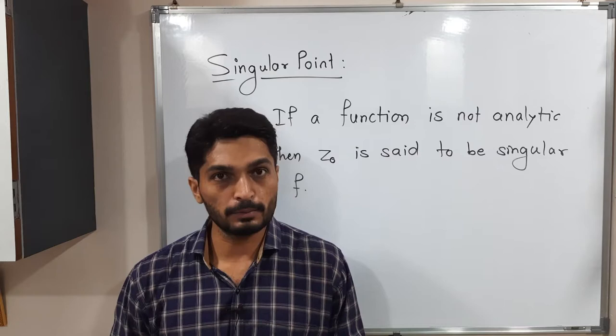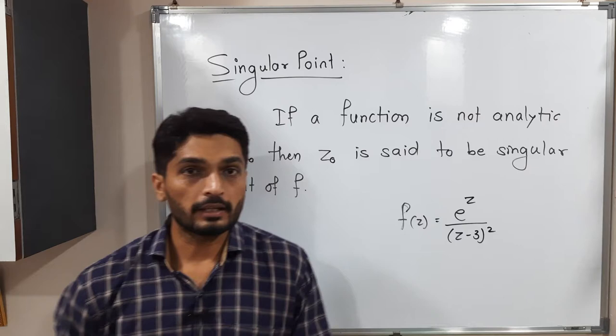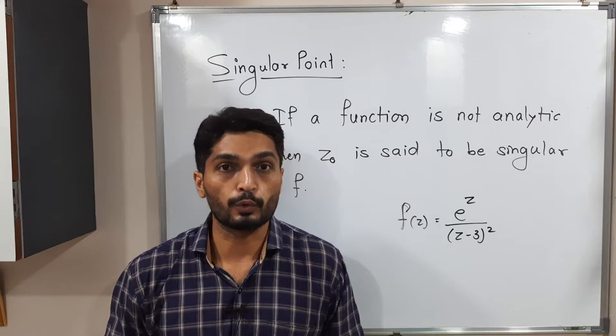Suppose we have a function f(z) = e^z / (z - 3)². You can easily see that if we put z = 3, the denominator will be 0, so the function won't be analytic. That means z = 3 is a singular point of this function.